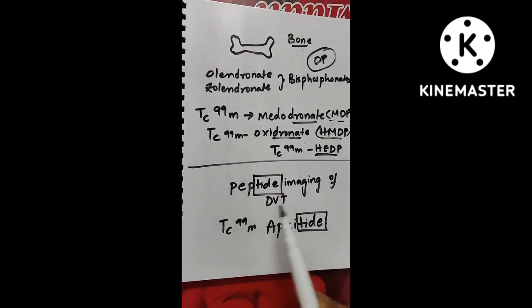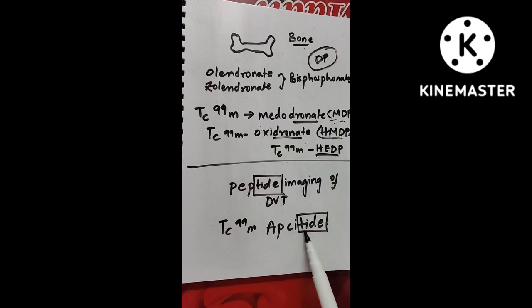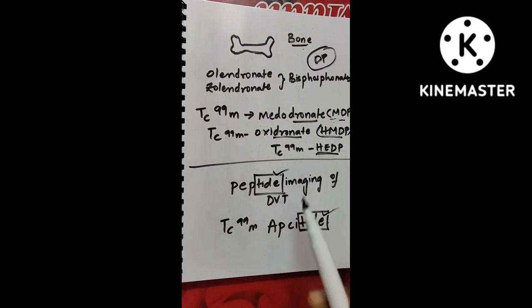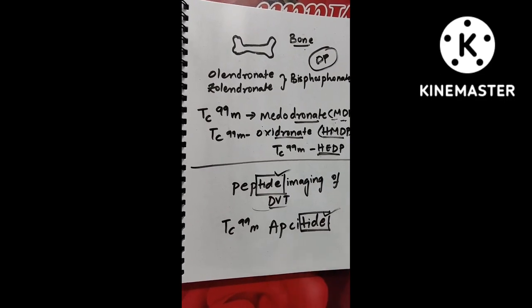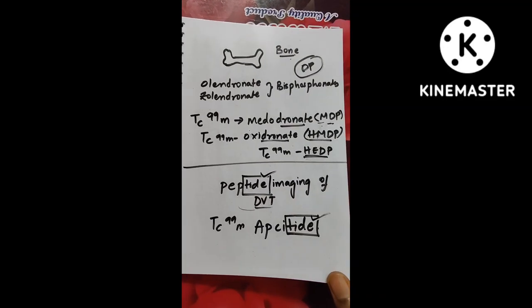Now comes to the peptide imaging of the DVT. It has technetium-99M Apsetide. Peptide, Apsetide. This is for DVT, deep vein thrombosis. This completes the two examples.